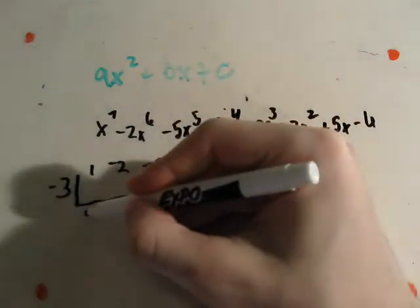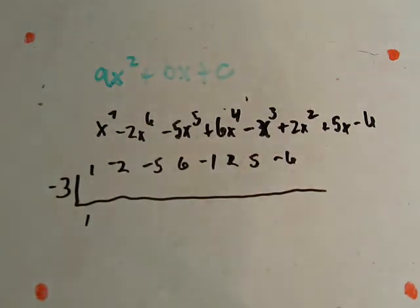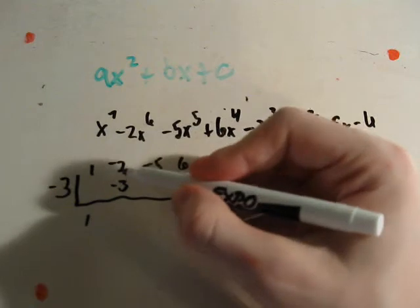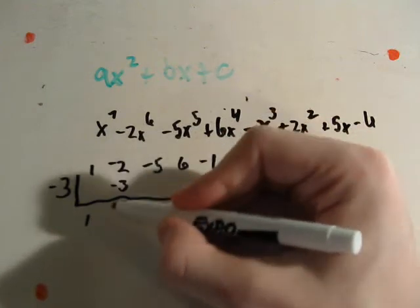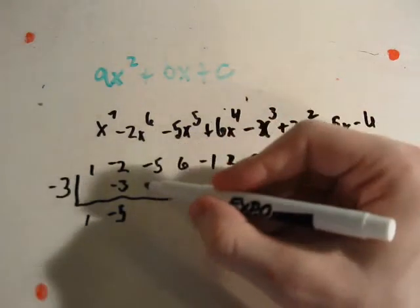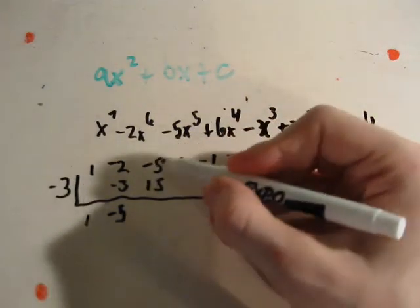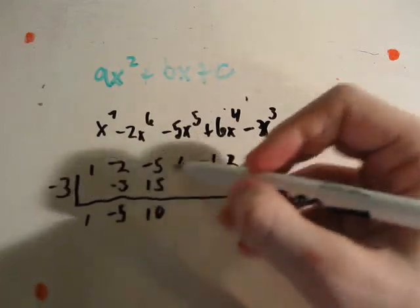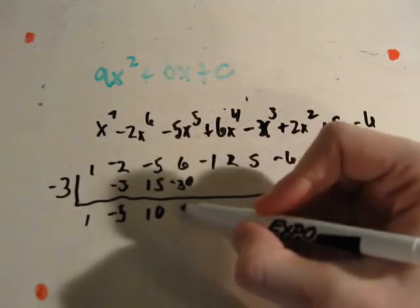We drop our first digit down, and that gives us negative 3 times 1 is negative 3. Add these together to get negative 5. Negative 3 times negative 5 is 15. Add them together, you get 10. Negative 3 times 10 is negative 30.